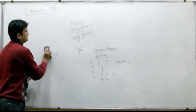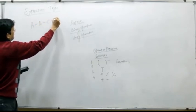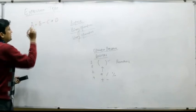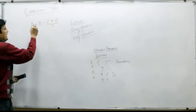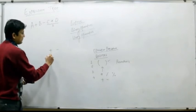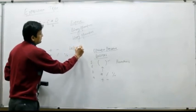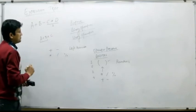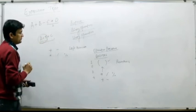Let's take another example: A plus B minus C multiplied with D. We have plus, minus, and multiplication. Multiplication has the highest precedence, so C multiplied with D becomes sub-expression number 1. Then I have plus and minus. If same-priority operators appear back to back — plus, minus, or multiplication, division, modulus — these are left associative. So A plus B is evaluated first, making it sub-expression number 2.